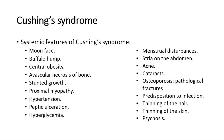The systemic features of Cushing's syndrome include moon face, buffalo hump, central obesity, avascular necrosis of bone, stunted growth, proximal myopathy, hypertension, peptic ulceration, hyperglycemia, menstrual disturbances, striae on the abdomen, acne, cataracts, osteoporosis causing pathological fractures, predisposition to infection, thinning of the hair, thinning of the skin, and psychosis.